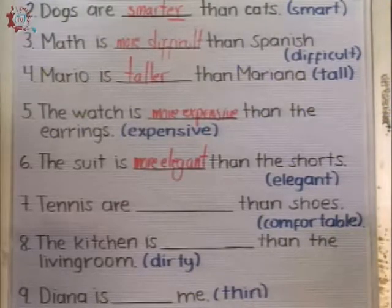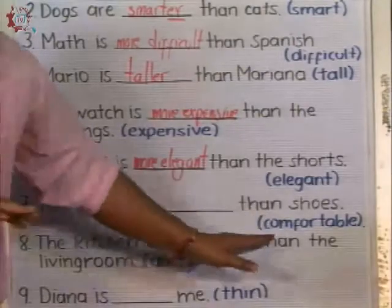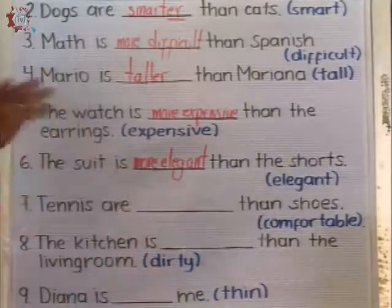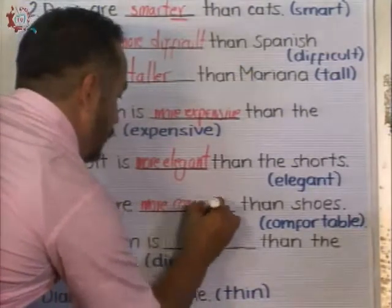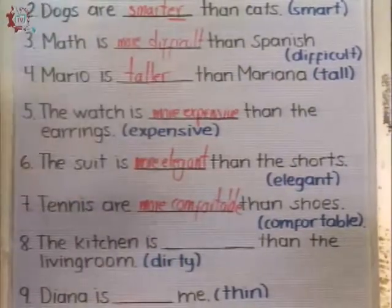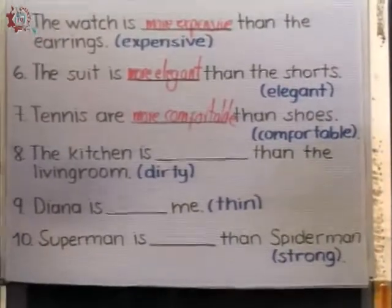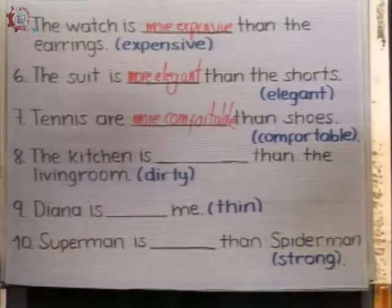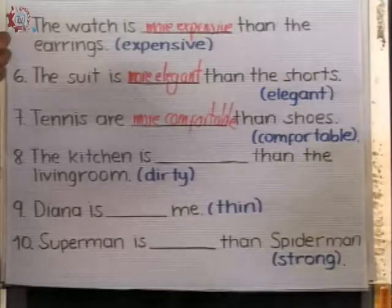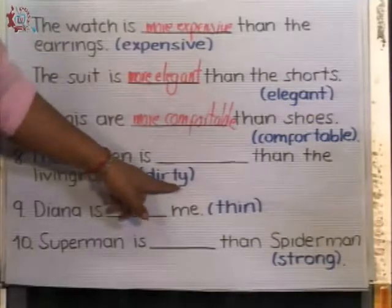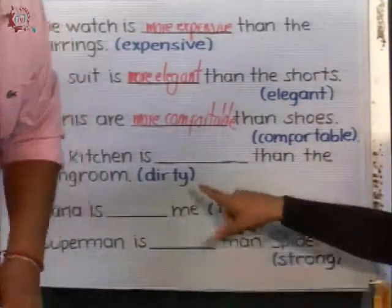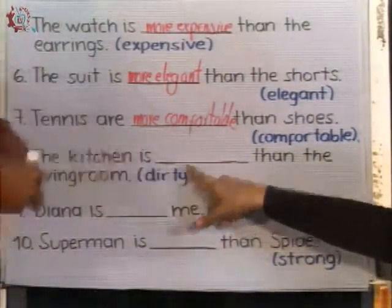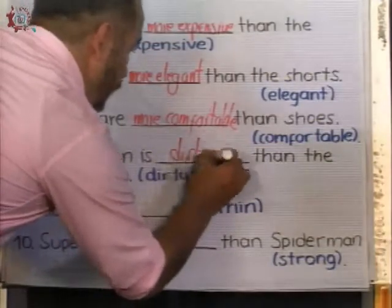Number seven: Tennis are ___ than shoes — adjective: comfortable. Com-for-ta-ble: three sounds, so it's a long adjective. More comfortable. That's right. Number eight: The kitchen is ___ than the living room — adjective: dirty. Two sounds. Could be a long adjective, but no — because it ends in -Y. Dos sonidos, cambiamos la Y por I latina y agregamos -ER: dirtier.